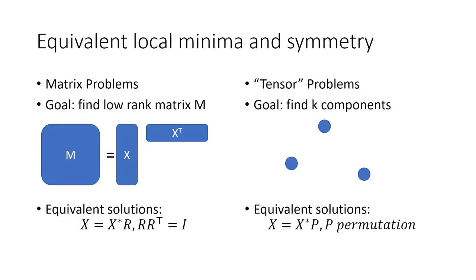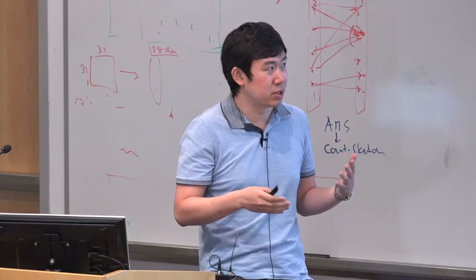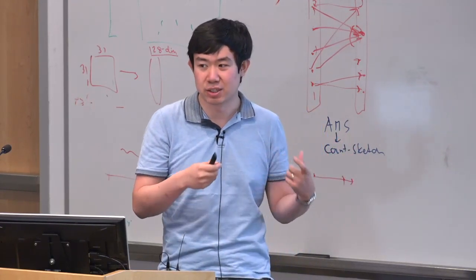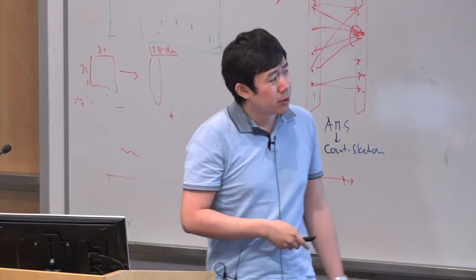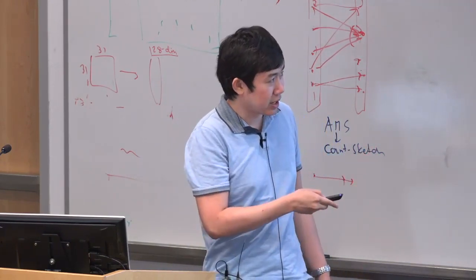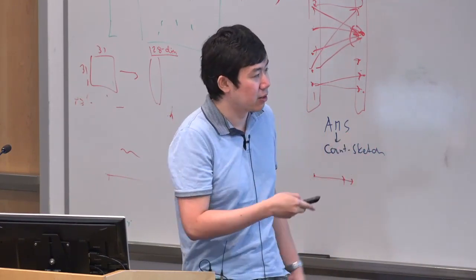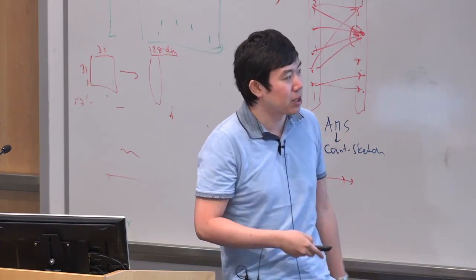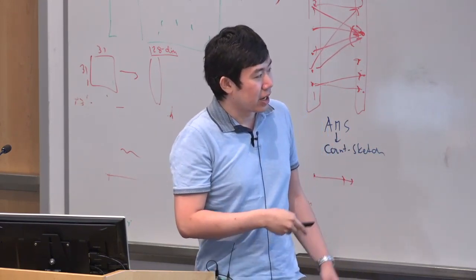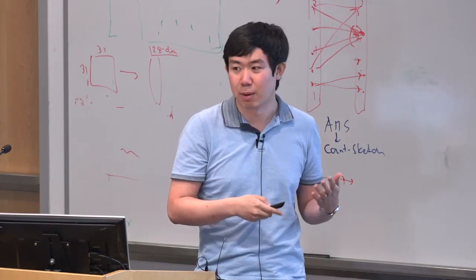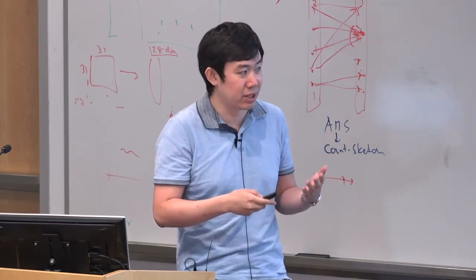Another type is tensor problems. The goal is to find K things — K components of a tensor, K centers for clustering, etc. You want to find these K things but don't care about their ordering. You can't apply an arbitrary rotation matrix, but you can apply an arbitrary permutation matrix to the solution and it remains the same.